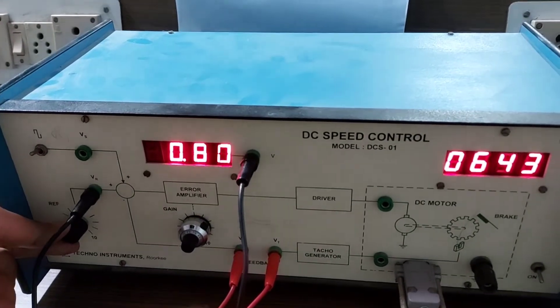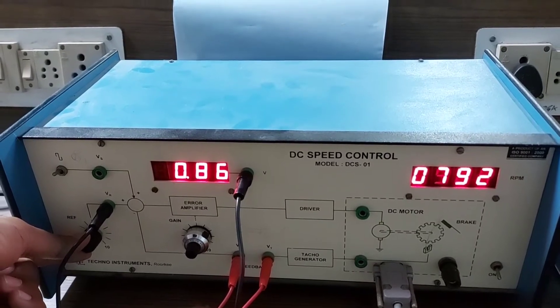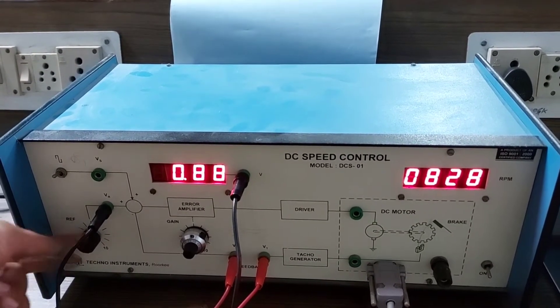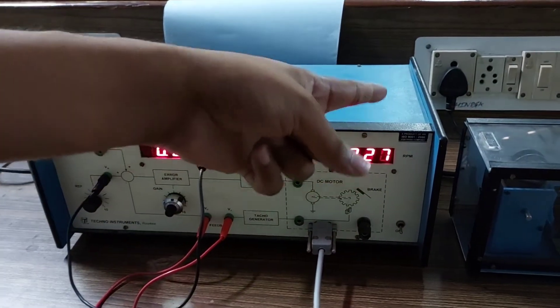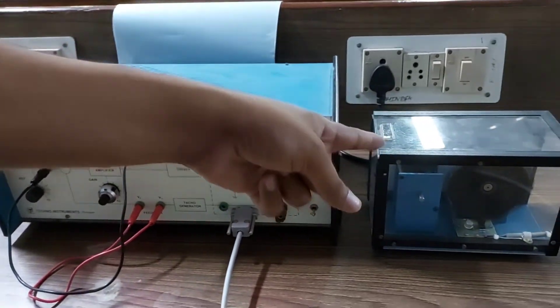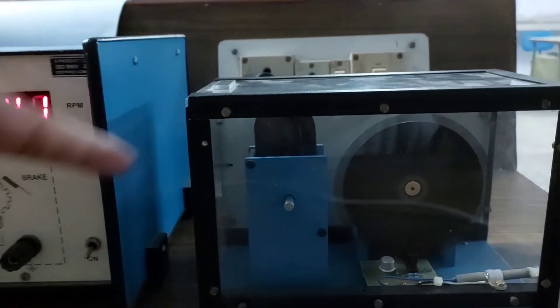it will increase to 0.80 to 0.87 volts and the corresponding RPM is 825. The previous one was 647, so this unit controls that motor to 841 RPM.